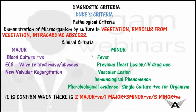The diagnostic criteria for infective endocarditis is known as Duke's criteria and consists of pathological and clinical criteria. In pathological criteria, we demonstrate the presence of microorganisms by culture or histological examination from sites such as vegetation, an embolus from vegetation, or an intracardiac abscess. When the presence of a microorganism is confirmed, infective endocarditis is diagnosed.